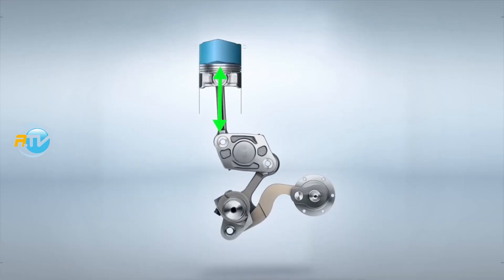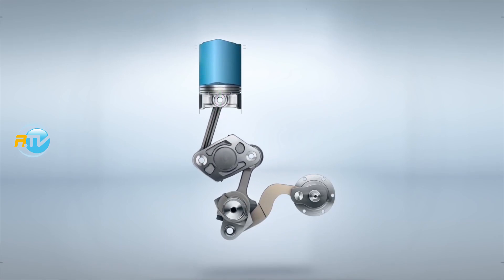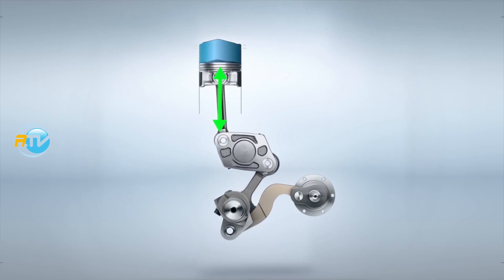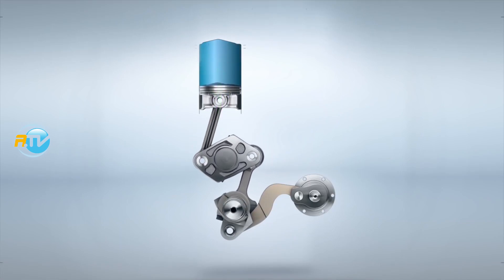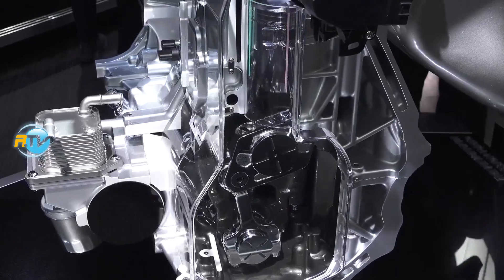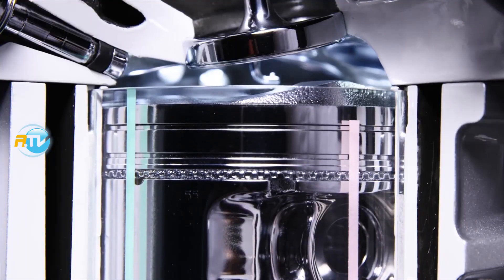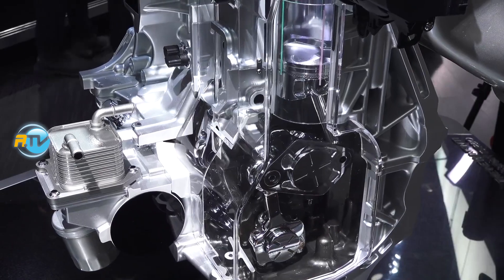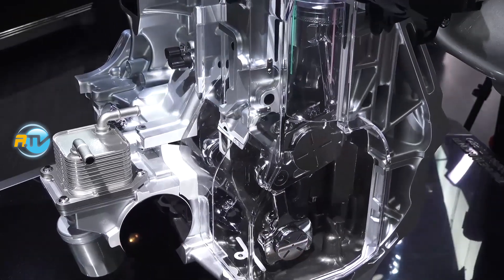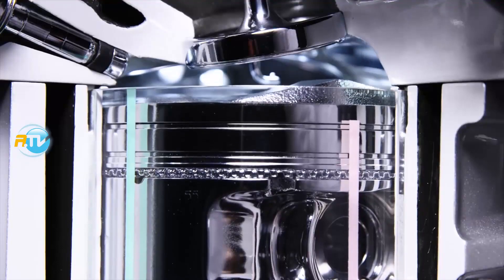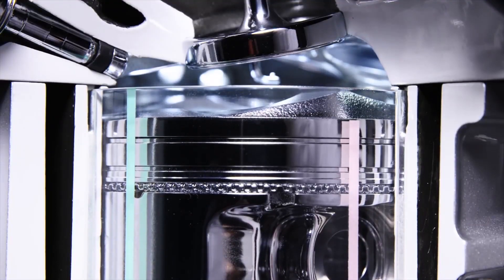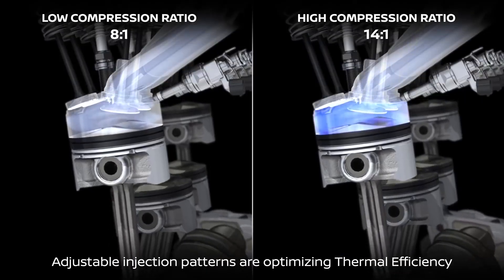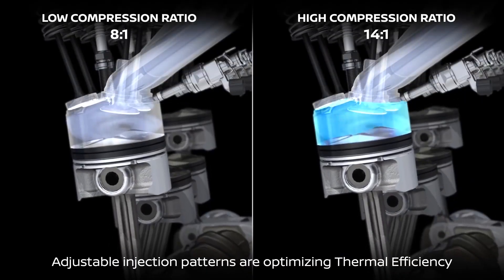The piston has a determined stroke, and when it reaches the top there is a remnant volume. How many times does that volume fit in the stroke of the piston? That is the compression ratio — 10 to 1, 8 to 1, 12 to 1.